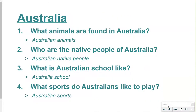Let me show you what I mean. This is the work we had done together before — I had been showing you the country I wanted to study and the questions I wanted to research about it. I chose four questions: what animals are found in Australia, who the native people of Australia were, what school was like in Australia, and what sports they like to play there. We had also done a lesson on research queries — rather than typing out a full question like 'what animals are found in Australia,' you'd search something shorter like 'Australian animals' in the search bar.